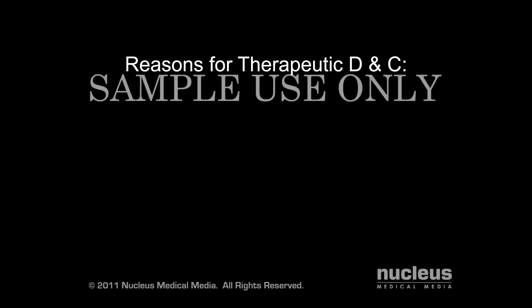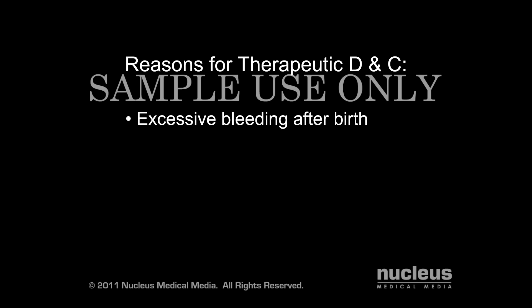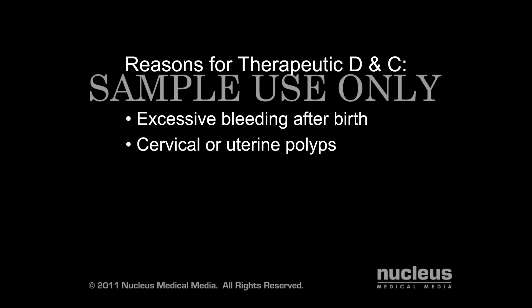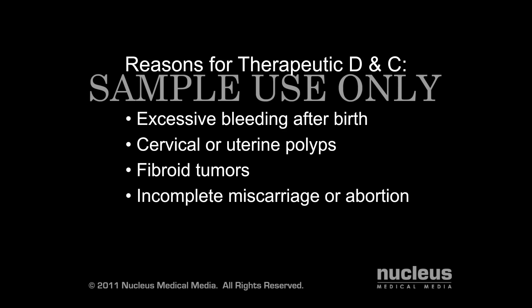A therapeutic D&C may be performed to treat certain uterine conditions, such as excessive bleeding after birth from remnants of the placenta, cervical or uterine polyps, fibroid tumors — which are benign tumors formed on the uterine wall — and incomplete miscarriage or abortion, in which parts of the embryo, fetus, or associated tissues remain in the uterus.